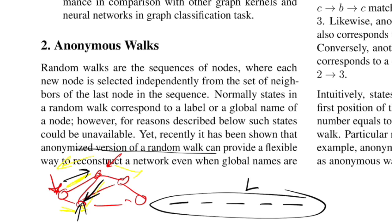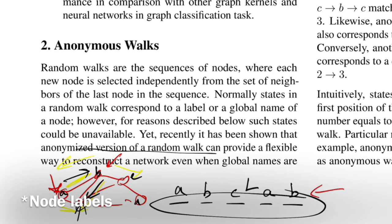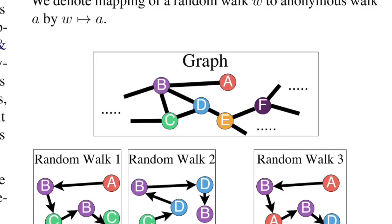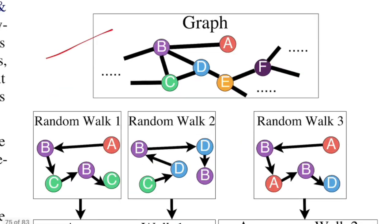In a random walk, you have the privilege of knowing the labels of the nodes — say A, B, C, D and E. So you traverse from A to B, then B to C, then maybe back to A and then B — that's one sequence of a random walk. Whereas in an anonymized random walk, you have no information about the nodes. So this is one random walk starting from A, going as A, B, C, B, C. And a second random walk goes C, D, B, D, B.